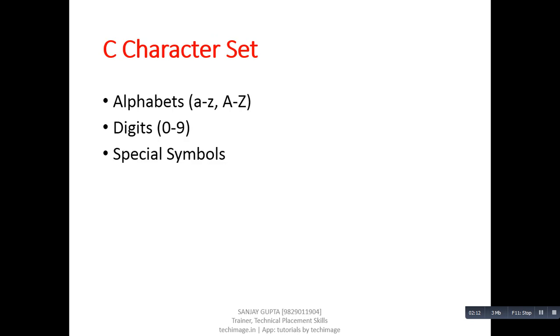Now, coming on the first feature of C that is C character set. It contains three entities. First one is alphabets which are small letters as well as capital letters. Second one is digits which are from zero to nine. Other than alphabets and digits, third entity is known as special symbols.